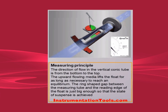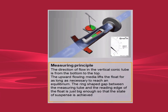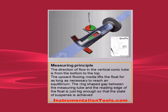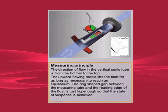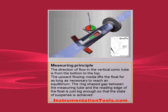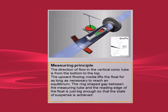A rotameter is a device that measures the flow rate of liquid or gas in a closed tube. It belongs to a class of meters called variable area meters, which measure flow rate by allowing the cross-sectional area the fluid travels through to vary, causing a measurable effect.